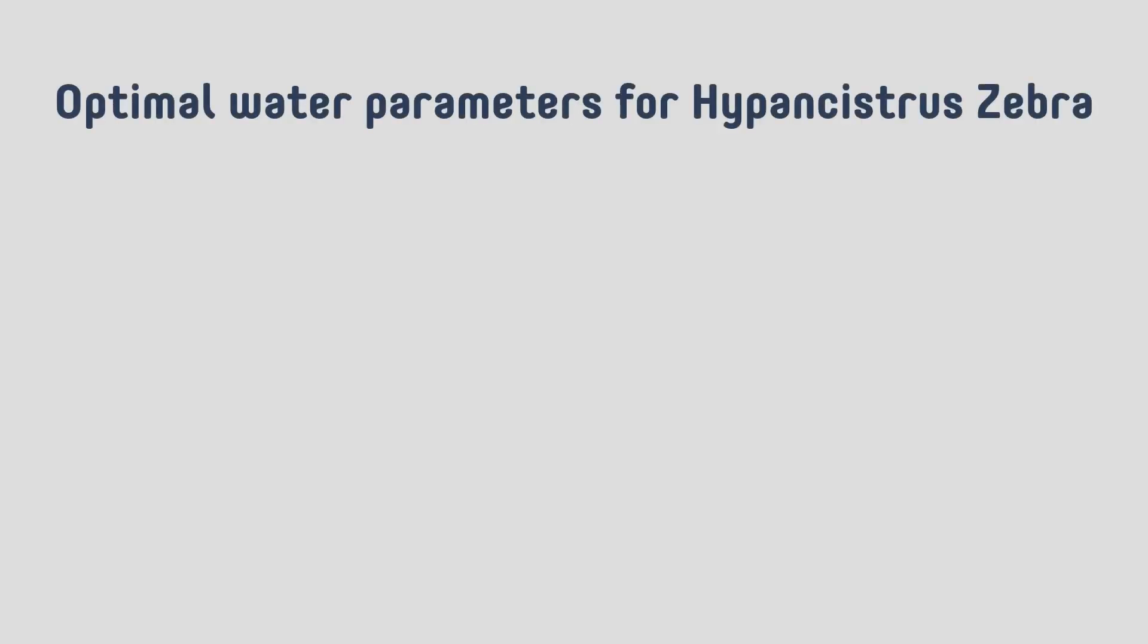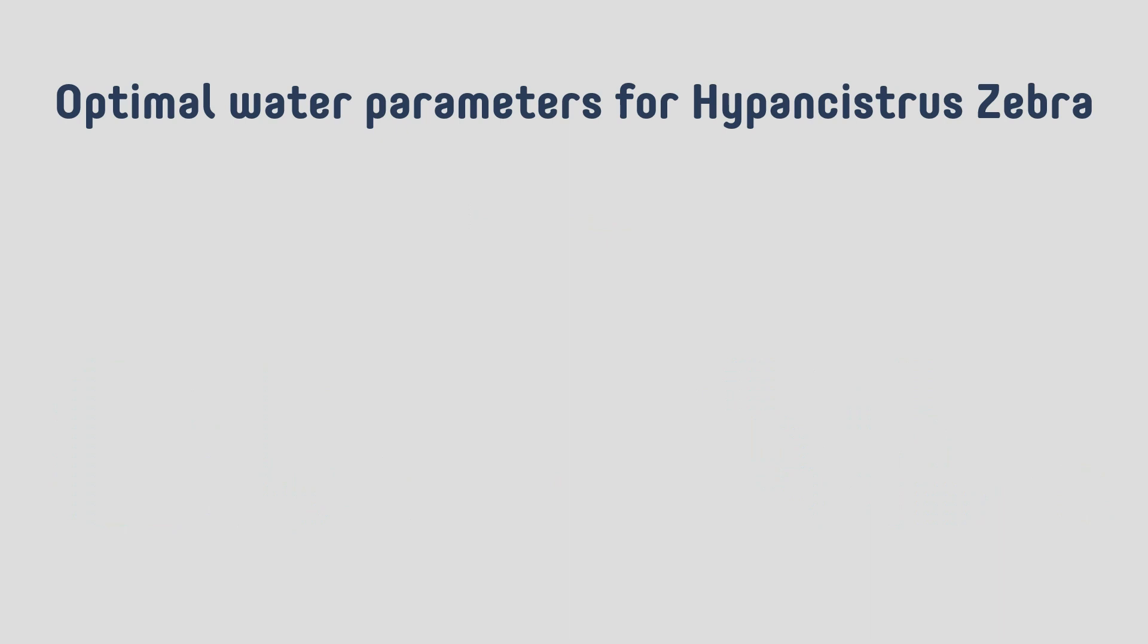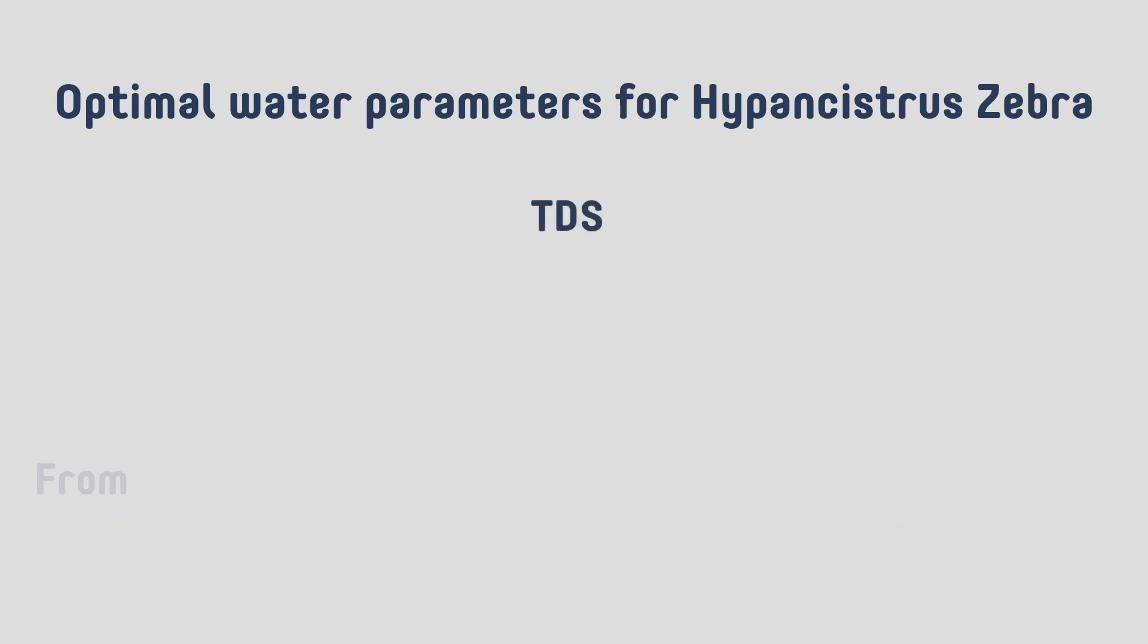We consider following water parameters optimal for Hypancistrus Zebra: Temperature 86 Fahrenheit or 30 Celsius, TDS from 60 to 80 ppm, pH 6.8 to 7.0.